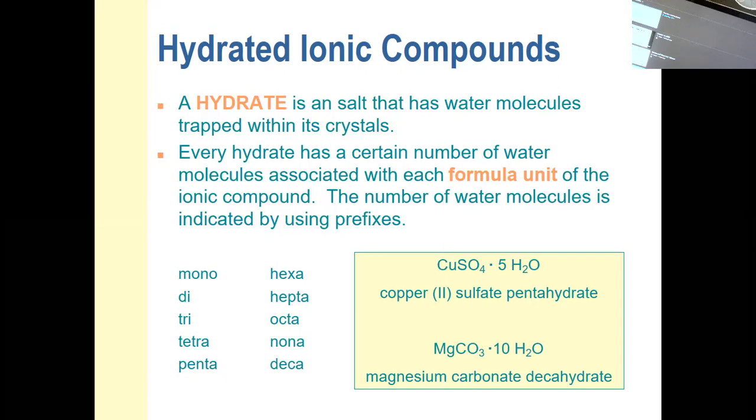We also dealt with type 2 binary ionic compounds. There, the metal had more than one possible charge, so we used Roman numerals in the name. Earlier today we learned about complex ions, so ionic compounds that have complex ions in their formulas, and today just this last bit, hydrated ionic compounds.